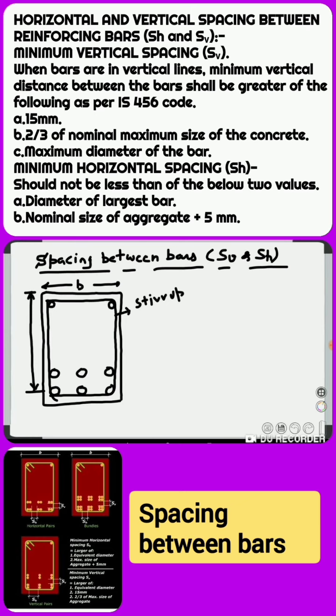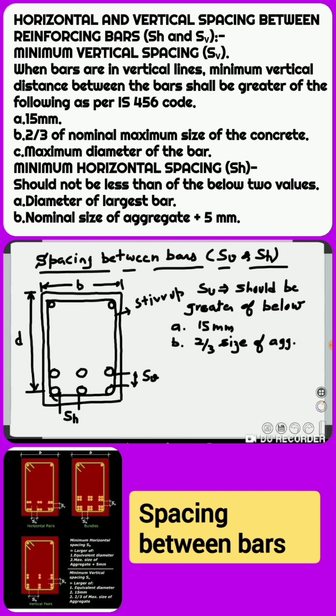Minimum vertical distance between the bars shall be greater of the following as per IS 456 code recommendations: A) 15 mm, B) two-thirds of nominal maximum size of the concrete, C) maximum diameter of the bar.